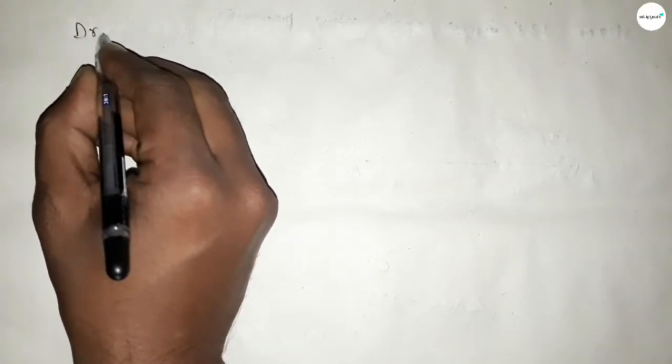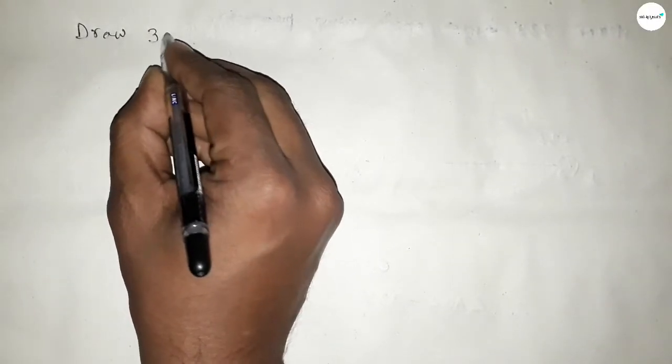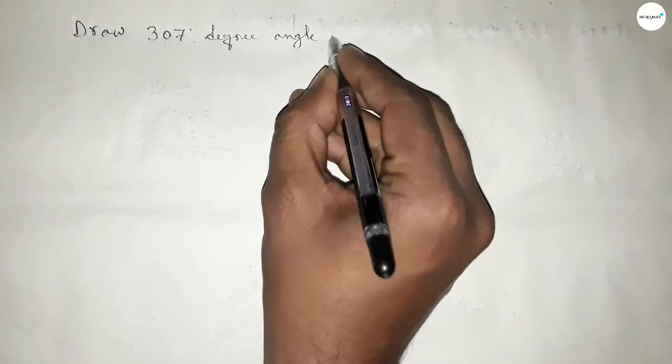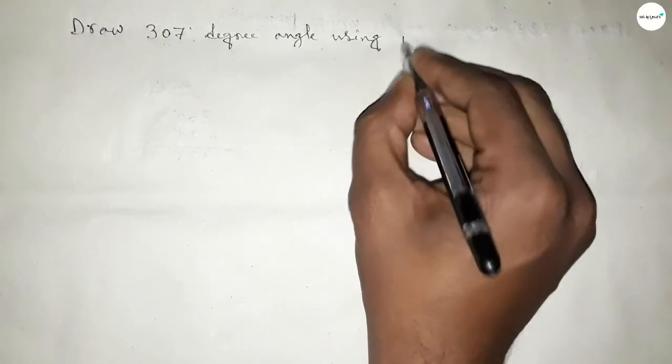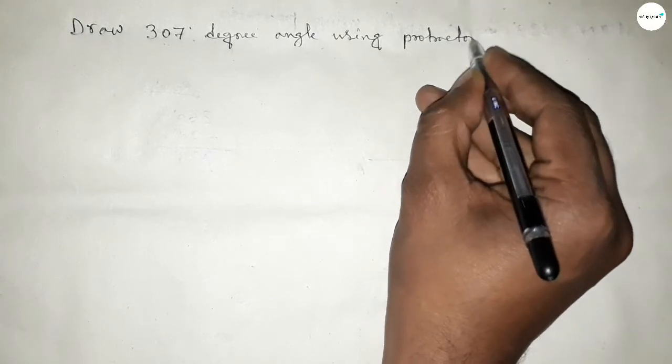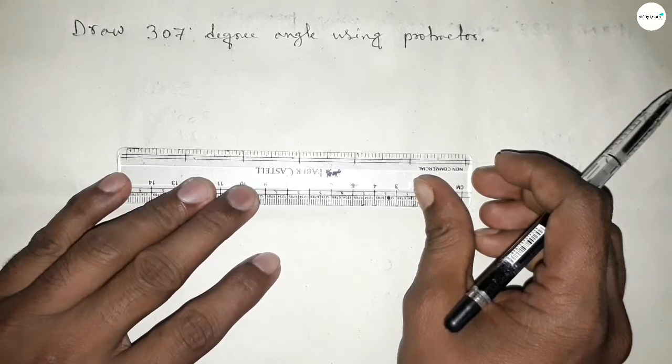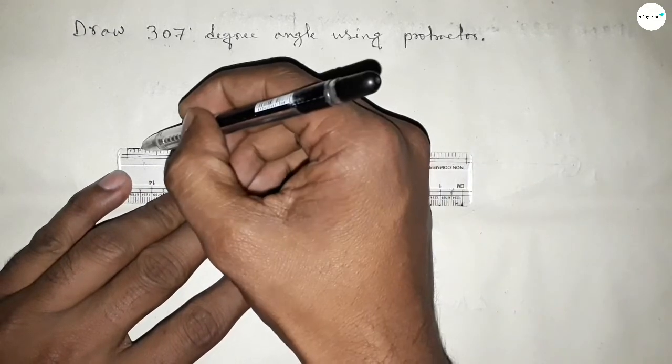Hi everyone, welcome to Sizecare Classes. Today in this video we have to draw a 307 degree angle by using protractor. So let's start the video. First of all, we have to draw here a straight line of any length.